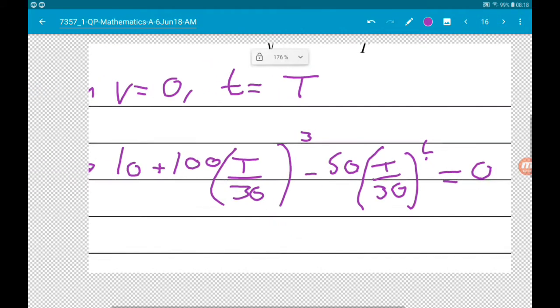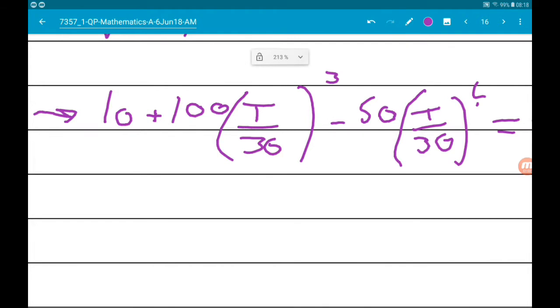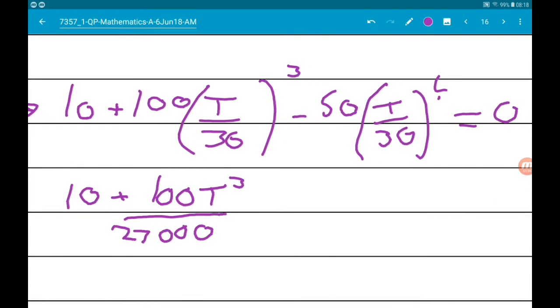So we get 10 plus 100t cubed over 30 cubed. 30 times 30 is 900 times 30 is 27,000. And then minus 50t to the power of 4 over 30 to the power of 4, which is going to give us 810,000. So that is equal to zero.